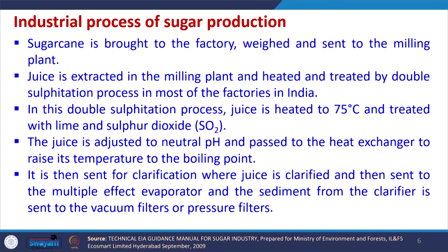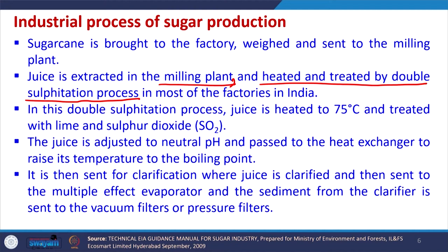Now, what is the process followed for sugar production? Sugarcane is brought to the factory, weighed, and sent to the milling plant. After that, sugar juice is extracted in the milling plant. It is heated and treated by a double sulfitation process used in most factories in India. In this process, the juice is heated up to 75 degrees centigrade and treated with lime and sulphur dioxide. The juice is then adjusted to neutral pH and passed to a heat exchanger to raise the temperature to the boiling point.